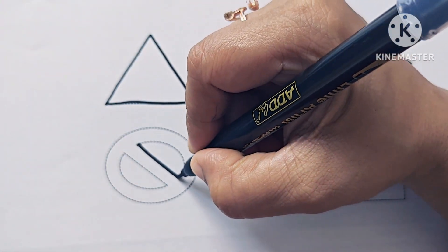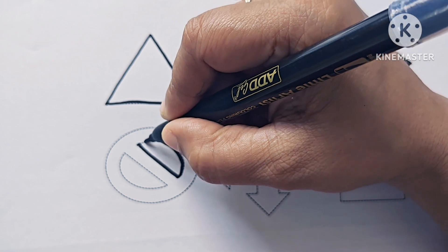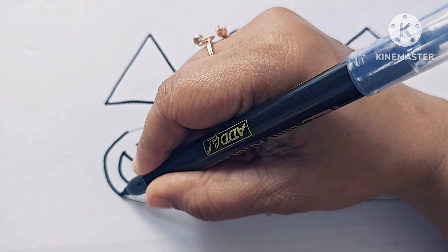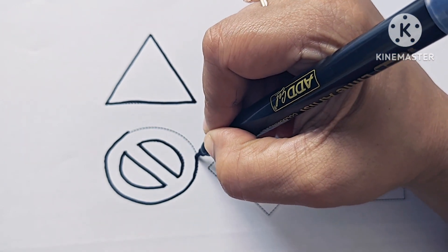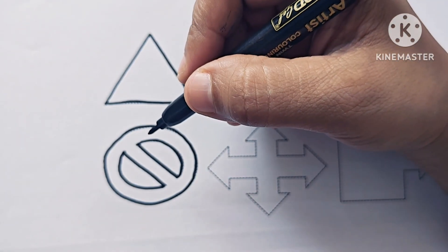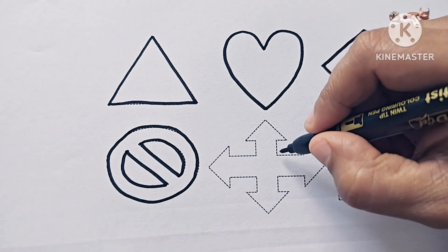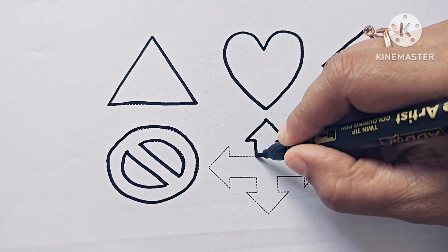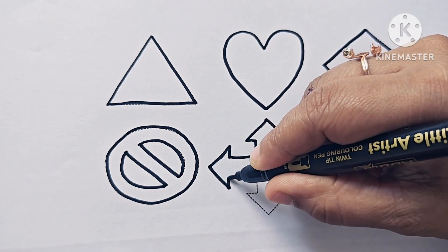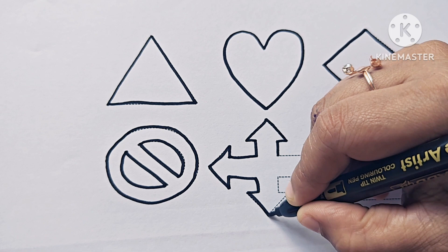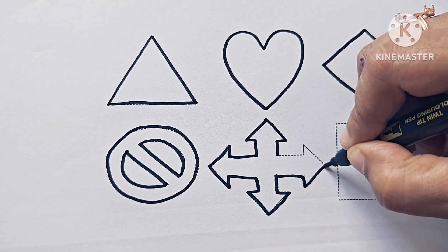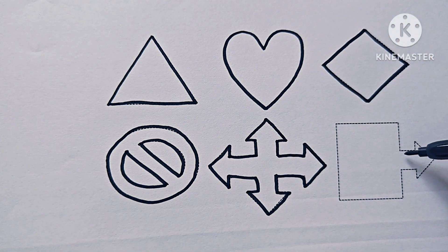And this is a symbol — the not allowed symbol. This is a quad arrow symbol. This is a right arrow callout symbol.